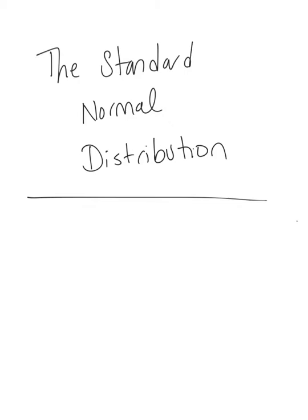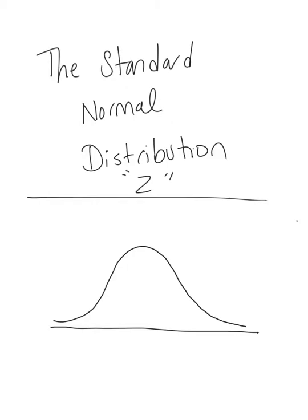The standard normal distribution, also known as the z distribution, is used when we have continuous data that is symmetrical in the way it is distributed. When we think about the normal distribution, we think of our bell-shaped curve. The way we find area here is just like we discussed in the CDF, PDF, and the uniform distribution.